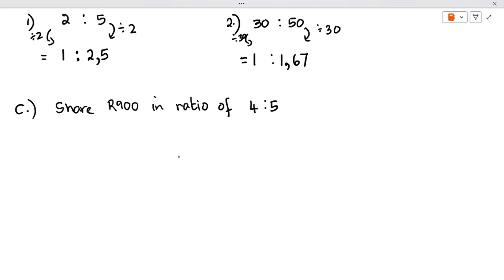The one method you could use is: number one, you add your ratio. So 4 plus 5 would give you 9. Then you're going to say 900 rand divided by 9, and that would give me 100 rand. Then we would take our ratio of 4 and 5. So if we were sharing it between two people, the one would be 4 times 100, and the other would be 5 times 100. Which would mean that one person would get 400 rand, and the other person would get 500 rand.